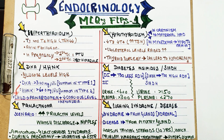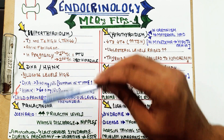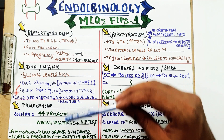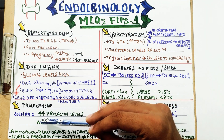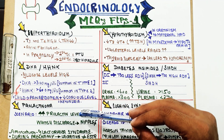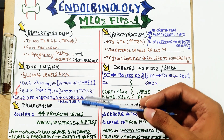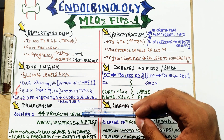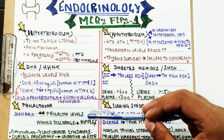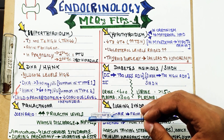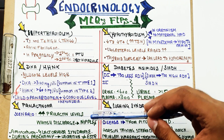Prolactinoma is a tumor of the anterior pituitary gland. As the name indicates, it means hypersecretion of prolactin. Since prolactin leads to milk letdown, there will be discharge from the nipples — whether in a male or female, vitrous discharge from the nipples will be given in the scenario.